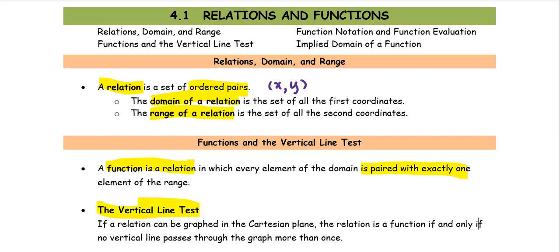The vertical line test is a test to verify whether the relation graph shows whether the relation is a function or not. If the relation can be graphed in the Cartesian plane, the relation is a function if and only if no vertical line passes through the graph more than once.